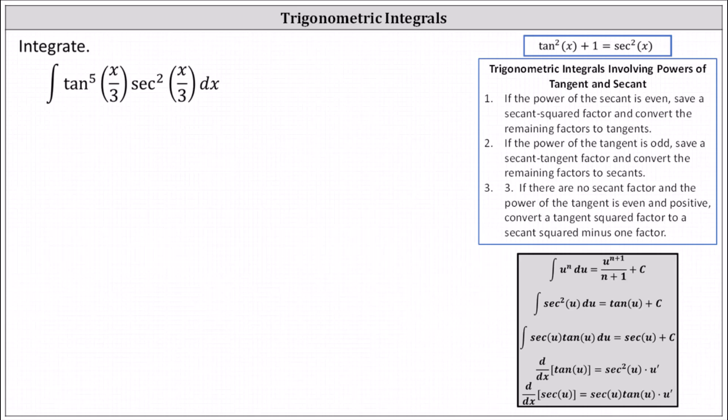In this example we have the integral of the fifth power of tangent of x divided by 3 times the square of secant x divided by 3 times dx.